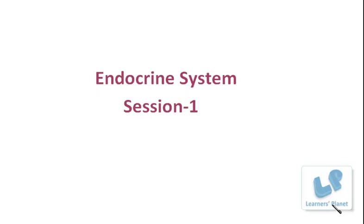Hello students, welcome to Learner's Planet. In today's session we are going to discuss about the endocrine system. This endocrine system is a special, specific system present in our body which is constituted by different types of endocrine glands — glands which secrete hormones that are transported to the target site through the blood. That means these are the ductless glands. Hormones are special chemical messengers which are required to control and coordinate different functions in our body.